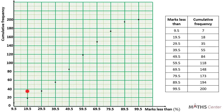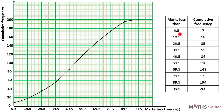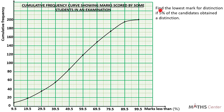The question says we should draw a cumulative frequency curve, so we join the points freehand to get the curve. We also choose a title for the graph — a cumulative frequency curve showing the marks scored by some students in an examination. Now we use the curve to answer the remaining parts. The first question is to find the lowest mark for distinction if 5% of the candidates obtained a distinction.